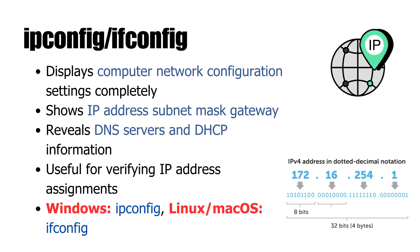On Windows, the command is ipconfig. On Linux and macOS, it's ifconfig. Both do the same thing — they show your computer's network settings. With one quick command, you'll see your IP address, subnet mask, default gateway, and DNS servers. On Windows, adding /all to ipconfig gives you even more details, like your DHCP information and physical MAC address. These commands are your go-to whenever you need to confirm your IP, check if your device grabbed an address from DHCP, or troubleshoot a connection issue.